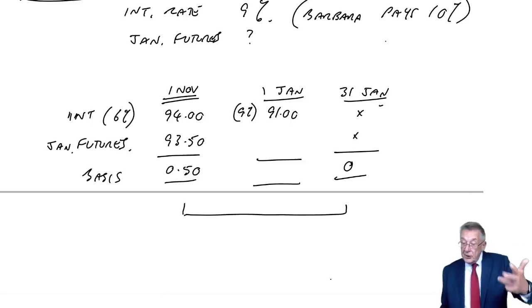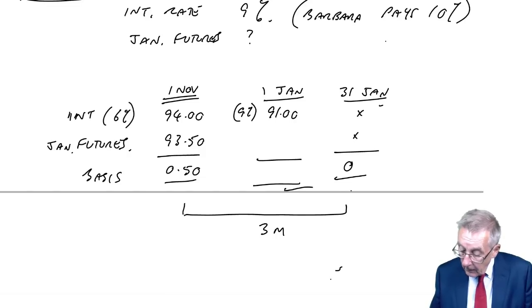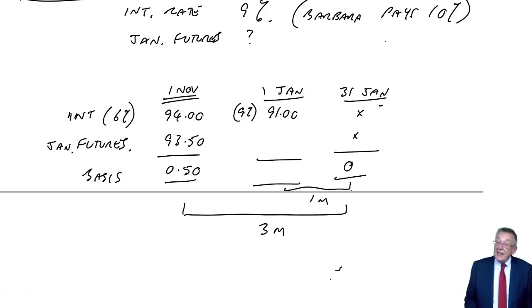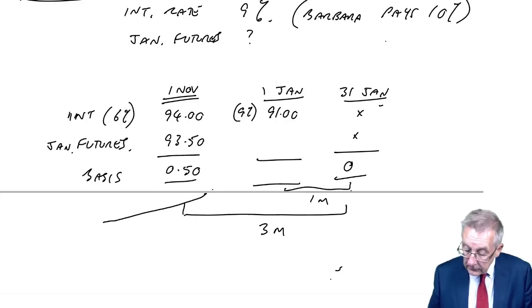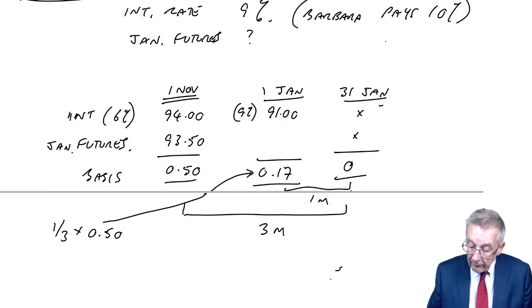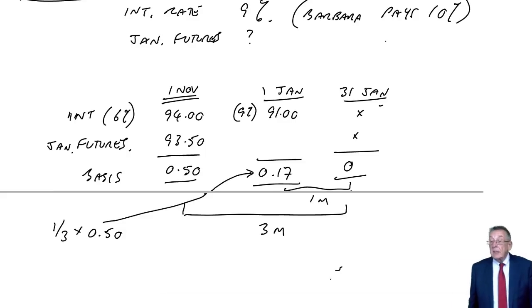So on the 1st of January, we know the interest rate is 9%, so the equivalent as a future would be 91. We want the futures price. We assume it falls linearly to 0 over the life of the future. Between now, 1st of November and 31st of January, November, December, January is three months. As at the 1st of January there's only one month left. So the unexpired basis, the basis on the 1st of January, will be 1 over 3 times 0.5, which will be 0.17. Interest rates and futures are always quoted to two decimal places.